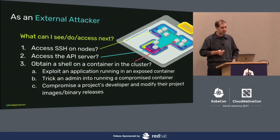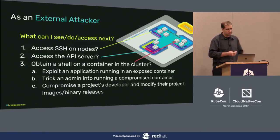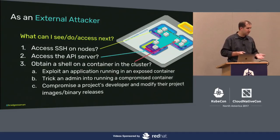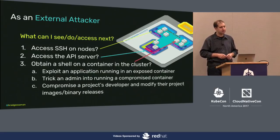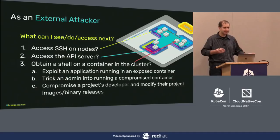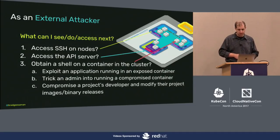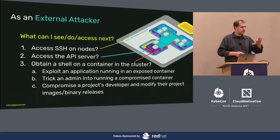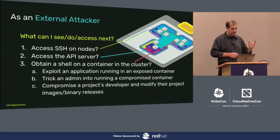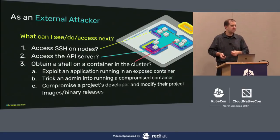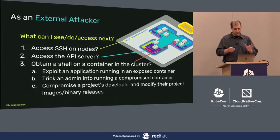Taking the persona of an external attacker looking at a cluster: are you going to get SSH access to the nodes? Maybe, not likely. Go through the API server? Maybe, not likely — you don't have credentials. But what about getting a shell on a container inside the cluster? That's where it gets interesting. The three methods I identified are: exploiting an exposed application, tricking an admin into running a compromised container, or compromising a project developer — their GitHub keys or Docker registry keys and modifying project images. During this research I actually found somebody's credentials in a git commit by accident; after I reported it, they confirmed it was their company's ability to push to Quay. Protect your keys.